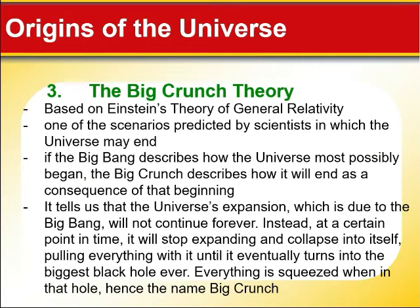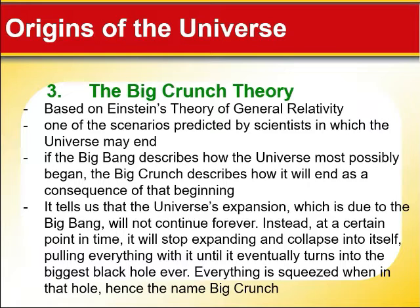The third theory is the Big Crunch Theory. This is the complete opposite of the Big Bang Theory and was based on Einstein's Theory of General Relativity. According to this theory, the universe also originates from matter and energy; however, instead of continuously expanding, it's continuously condensing. All the matter and energy combine with each other until there was a big crack, and out of that big crack, everything seeped out and became the universe as we know it. In contrast to the Big Bang, which expands, the Big Crunch condenses and collapses.